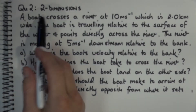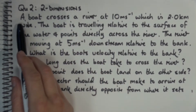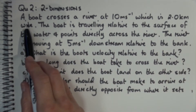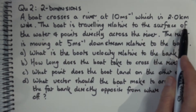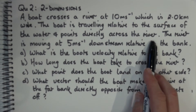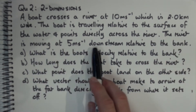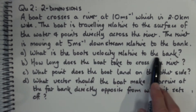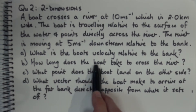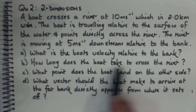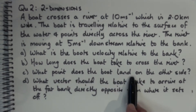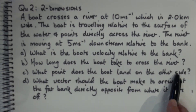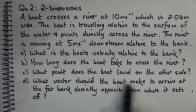In this video we're going to explore a problem on relative velocity in two dimensions. A boat crosses a river at 10 metres per second, and the river is two kilometres wide. The boat travels relative to the surface of the water and points directly across the river. The river moves at 5 metres per second downstream relative to the bank. We'll find the boat's velocity relative to the bank, how long it takes to cross, where it lands, and what vector the boat should take to arrive directly opposite.